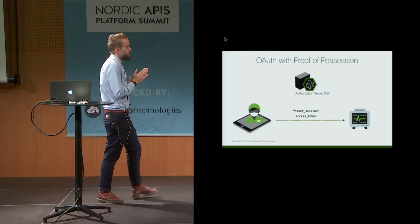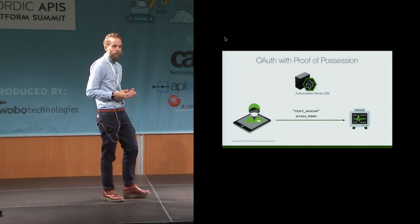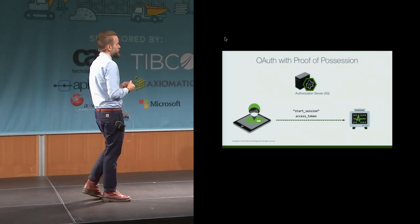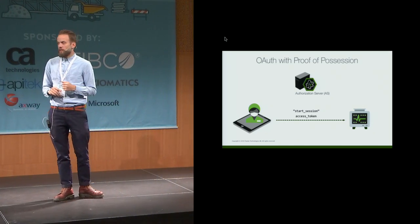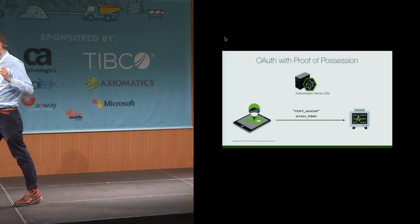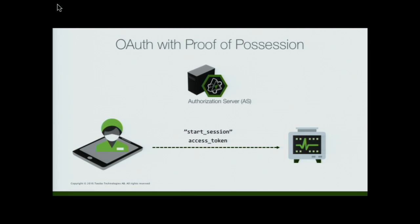So with proof of possession — that's what this is called — we start a session against the device. We send over not to the regular data endpoint, but to another endpoint on the device called AuthInfo — some protocols are discussing calling it that — and we send over our access token. This time we only use our access token once. Normally we would use it on every request, but now we use it once.